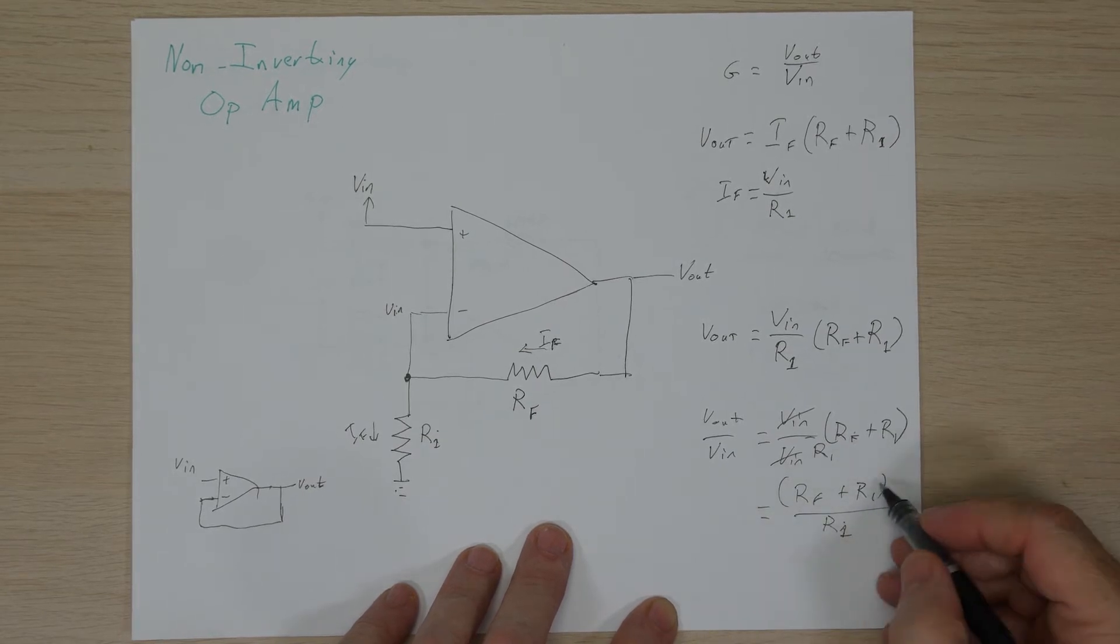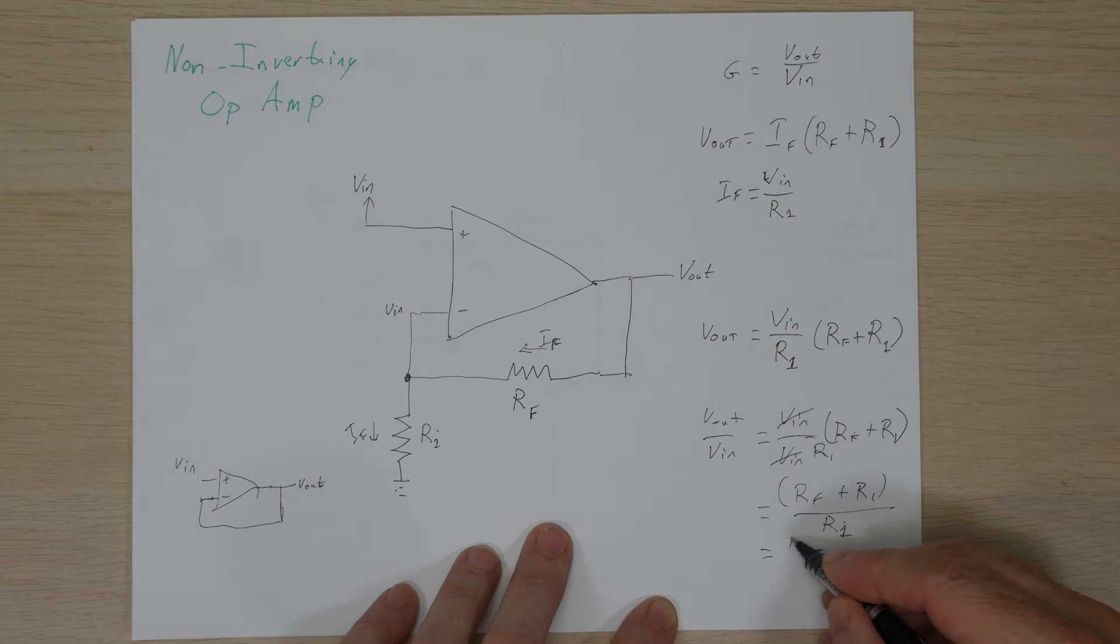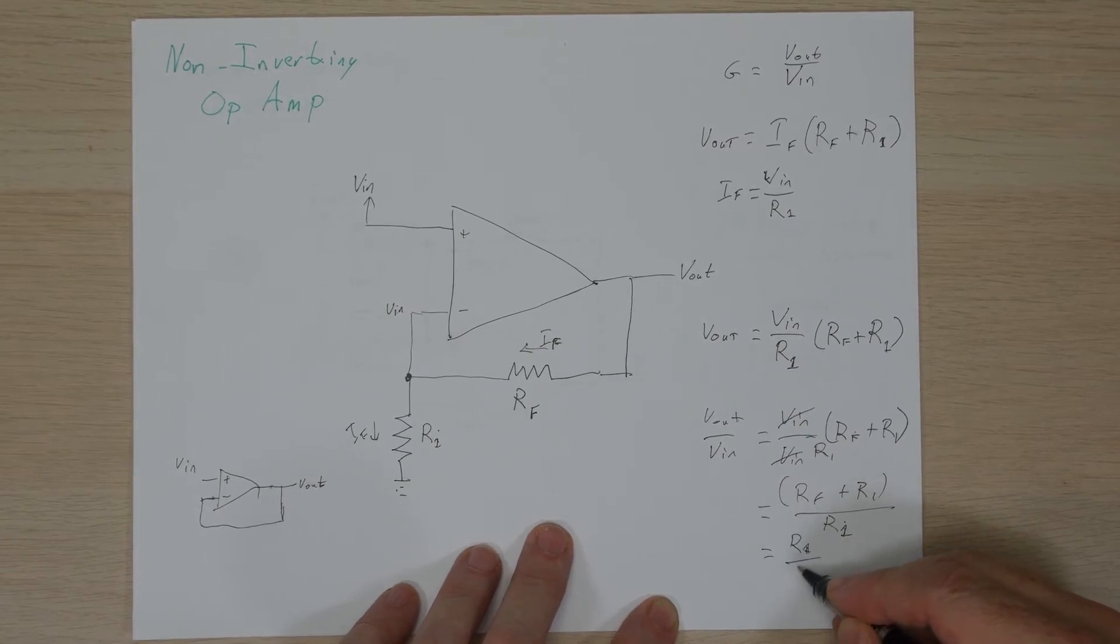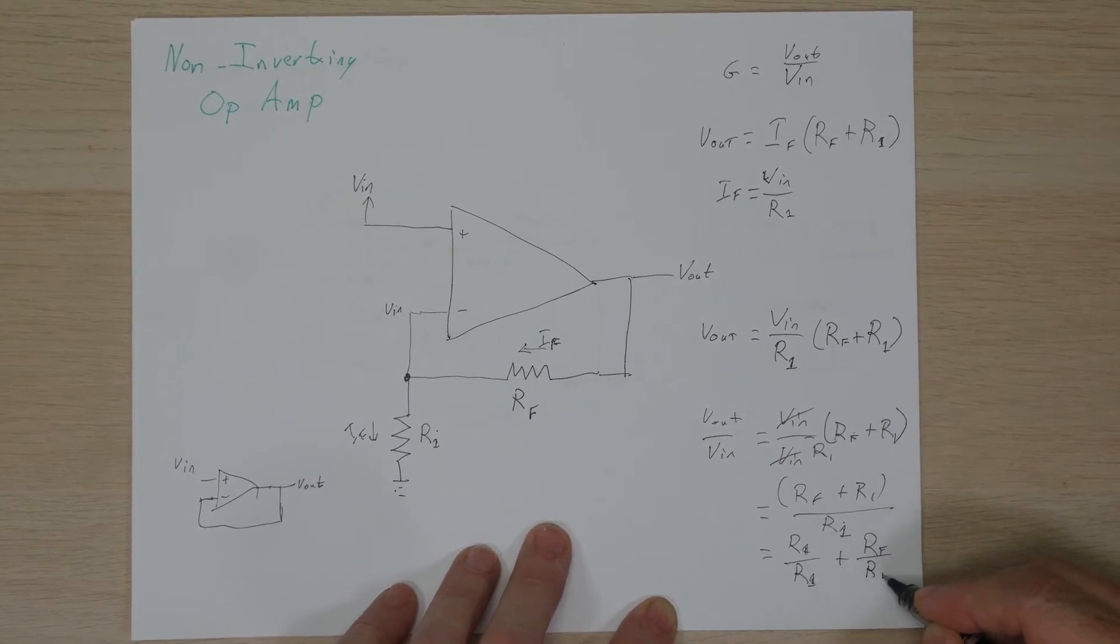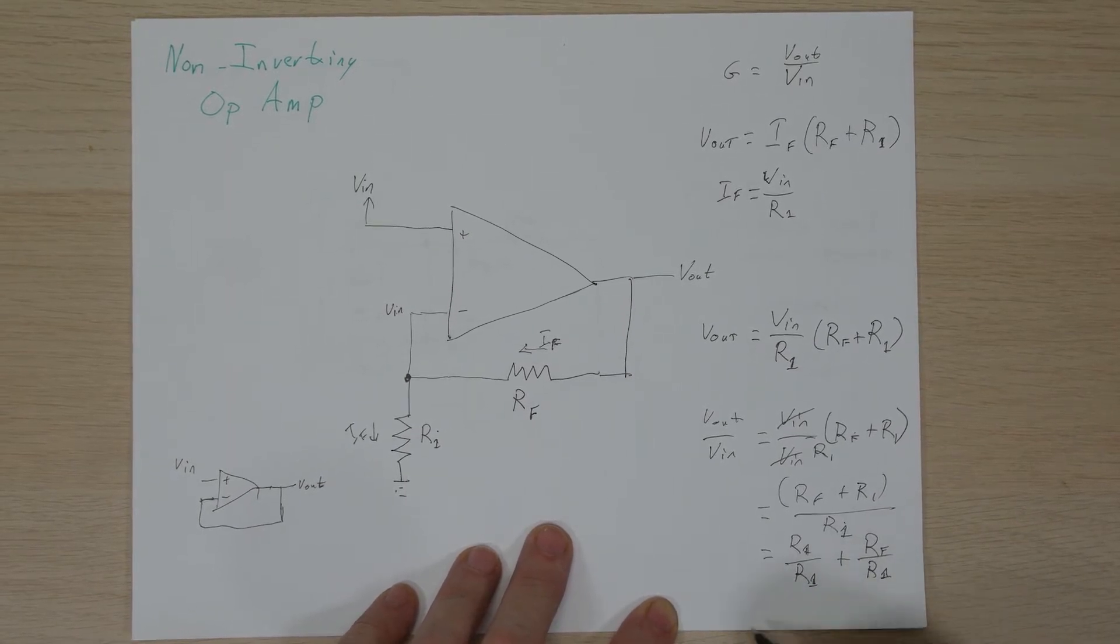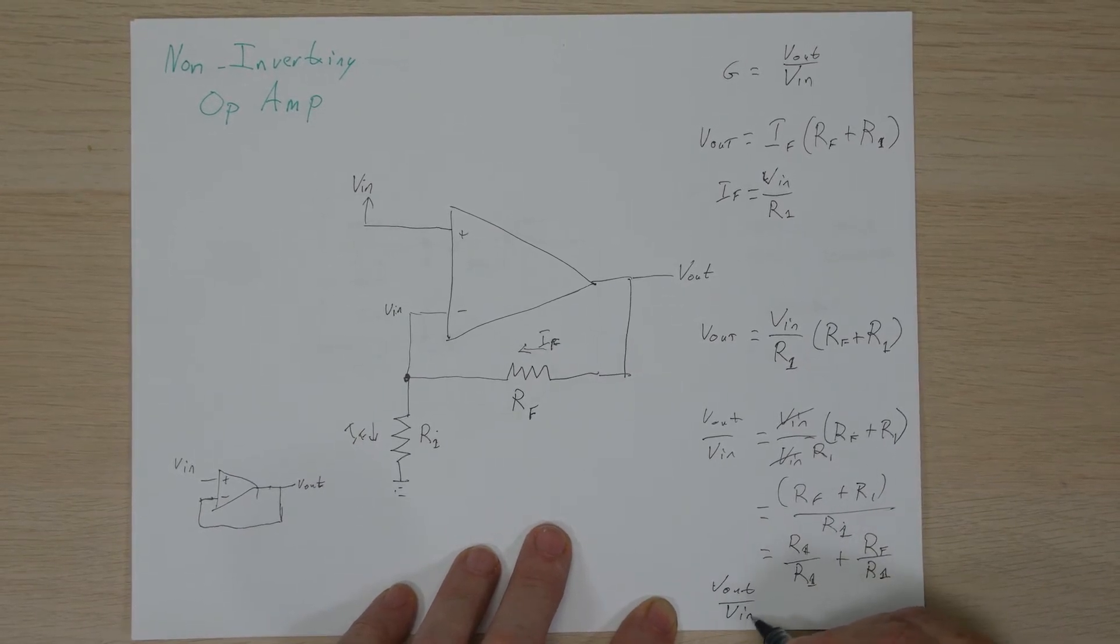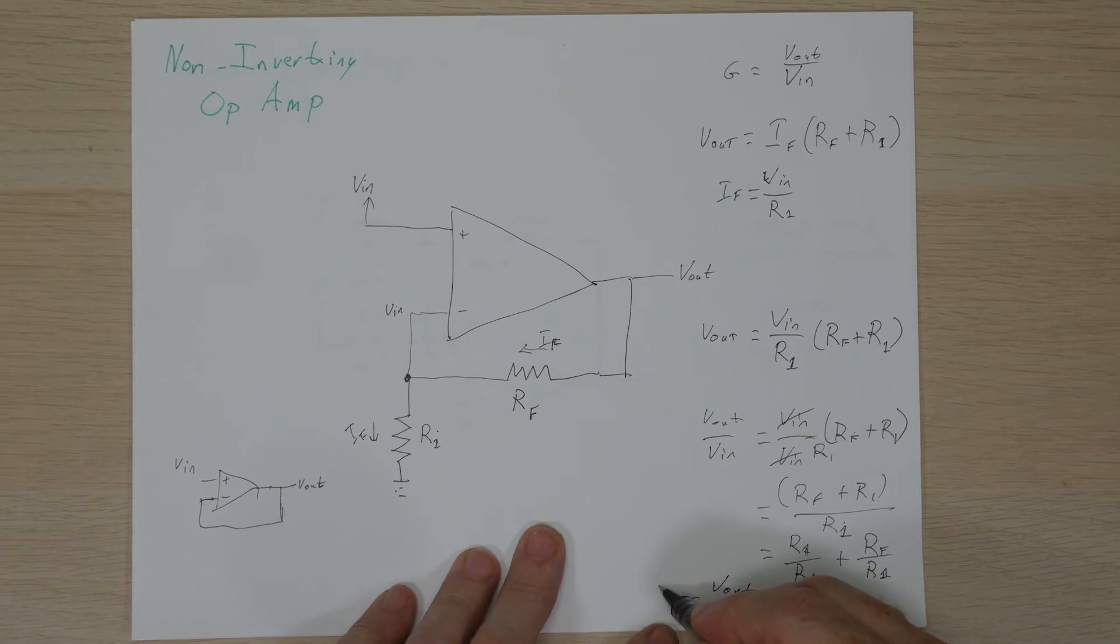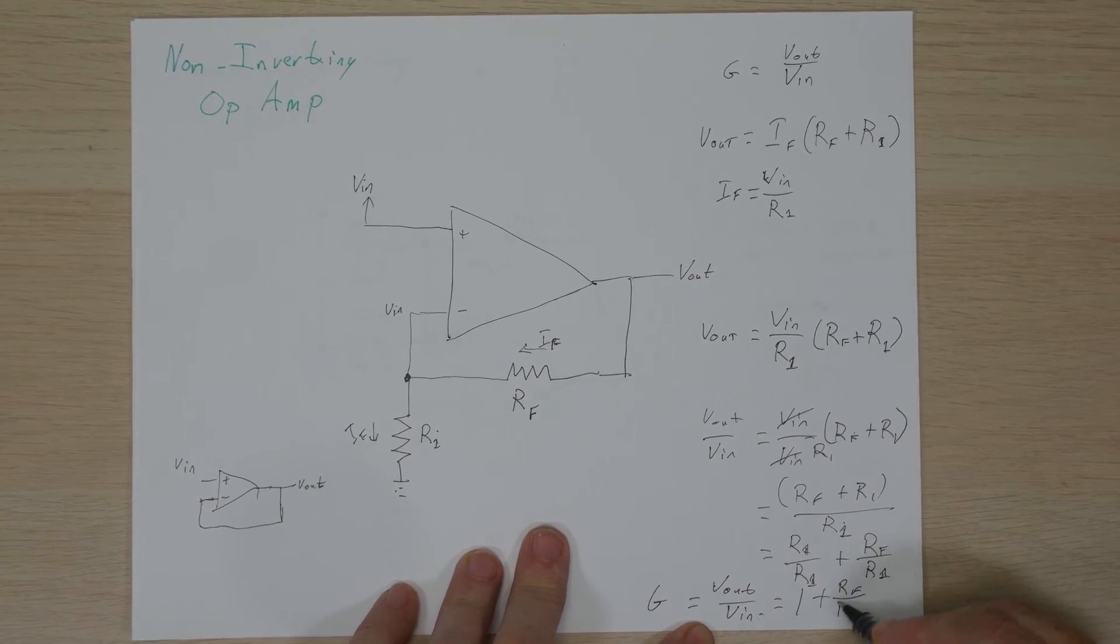Simplifying this even further, we'll go ahead and we'll move the R1, we'll swap places with these two. We can see that R1 divided by R1 plus RF divided by R1, and of course we know that this is equal to one, R1 over R1. So now what we get is V out over V in, or the gain of our circuit. We'll go ahead and call that the gain is equal to one plus RF divided by R1.